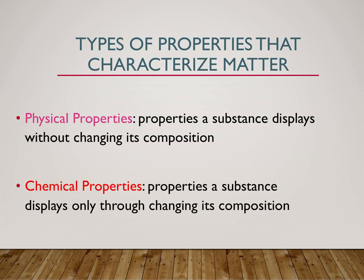Physical properties versus chemical properties — these are ways that we can characterize matter. Physical properties are properties a substance displays without changing its composition. Just by looking at the substance, what can you tell about it? Or by heating it up or cooling it down. Some examples of physical properties are things like luster — is it shiny or dull? Is it malleable — can you hit it with a hammer? What color is it? What's its melting point? What's its boiling point?